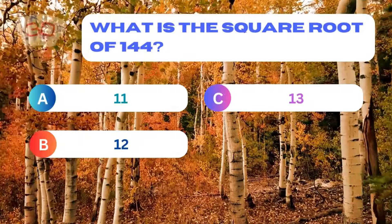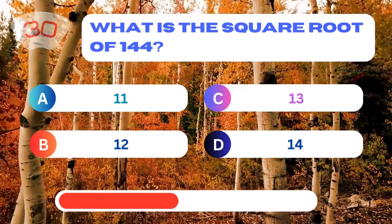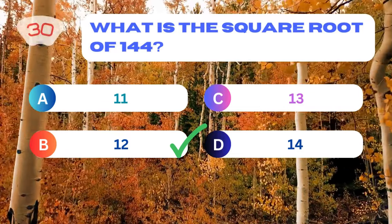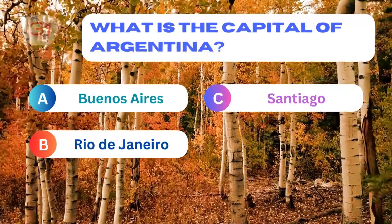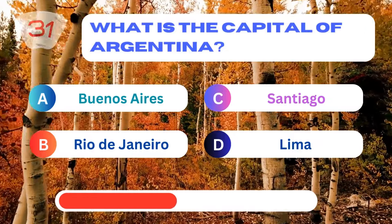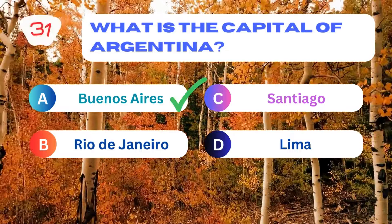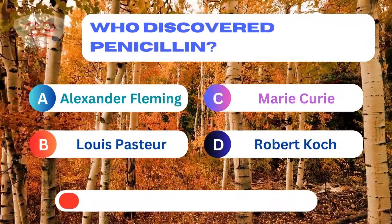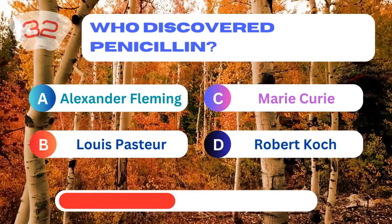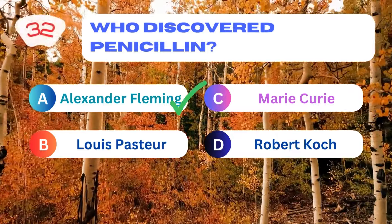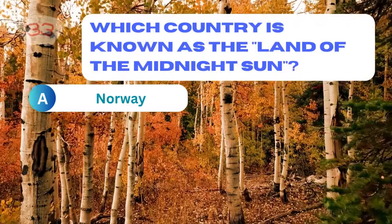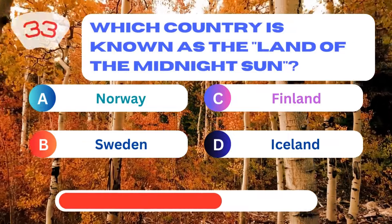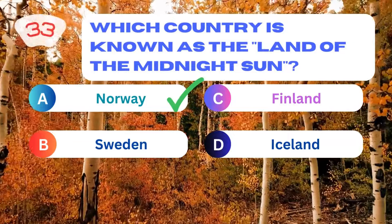What is the square root of 144? 12. What is the capital of Argentina? Buenos Aires. Who discovered penicillin? Alexander Fleming. Which country is known as the land of the midnight sun? Norway.